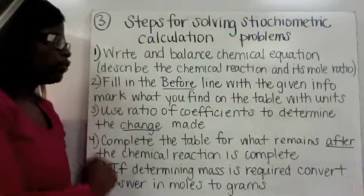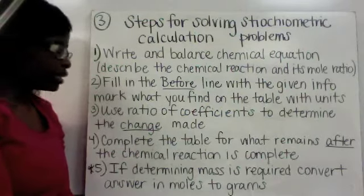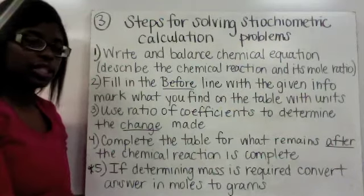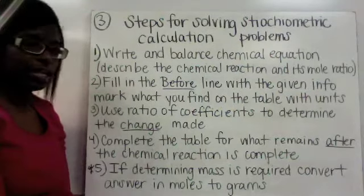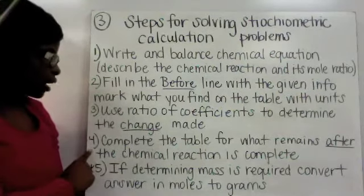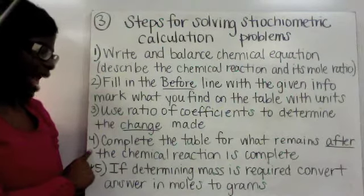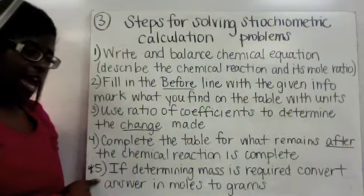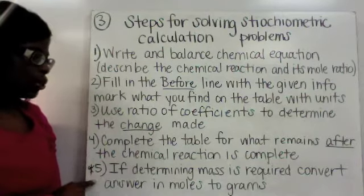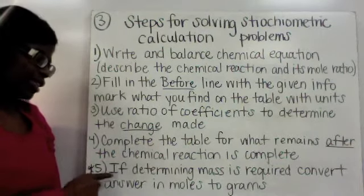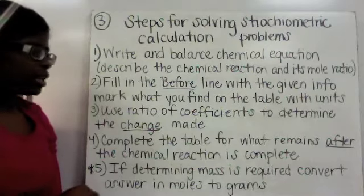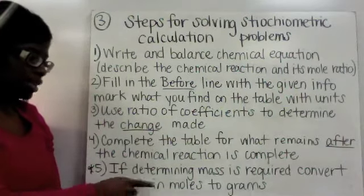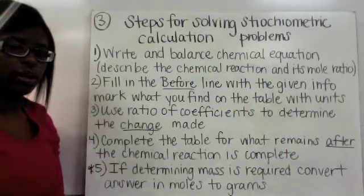You're going to mark what you find in the table with its units. Step three: use the ratio of coefficients to determine the change made. Step four: complete the table for what remains after the chemical reaction is complete. Step five — notice it has a star beside it — you only use step five if it's going to ask you to determine the mass. You're going to convert your answer that's in moles to the mass, which is measured in grams.